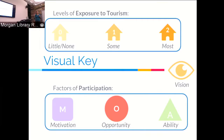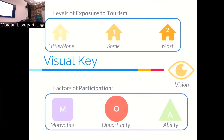One of those themes is the community's level of exposure to tourism — one community with little to no exposure, one with some, and one with the most exposure. We'll also talk about vision in relation to our NGO and the communities, represented by an eye symbol. And we'll discuss factors that contribute to participation in tourism: motivation, opportunity, and ability — each with their own symbols.